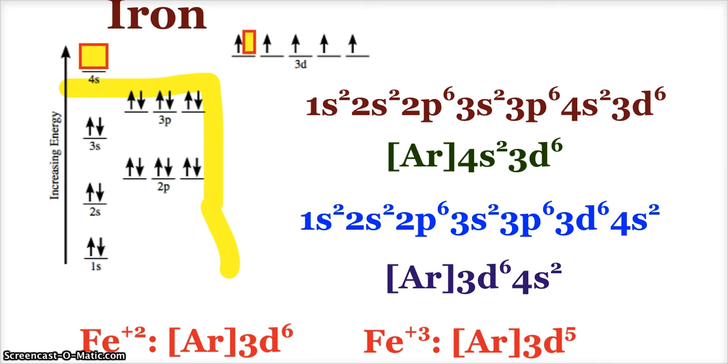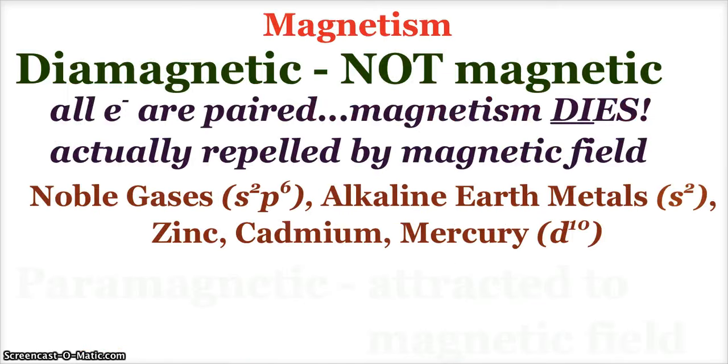When it comes to magnetism we can have diamagnetic, paramagnetic, and ferromagnetic. A substance is diamagnetic, it means it's not magnetic—all of the electrons are paired up. Magnetism dies. These diamagnetic materials are actually repelled by a magnetic field. If we're looking at elements on the periodic table, our noble gases, alkaline earth metals, and zinc, cadmium, and mercury are notorious diamagnetic materials because they have all paired electrons.